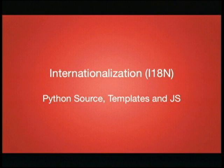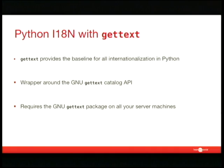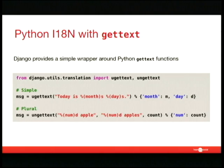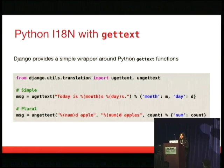So, internationalization of Python source, templates, and JavaScript. The gettext module in Python is essentially the baseline of all internationalization in Python. It is really just a wrapper around the GNU gettext Catalog API. Using this function in your Python source requires this package to be installed on all of your server machines. So if you're working with any sort of package management configuration, like Chef or Puppet, you want to add gettext to that. Django provides a really simple wrapper around the gettext functions that Python provides. You simply import this from the utils translation package in Django. You should be importing the ugettext function because it helps support Unicode strings, and given that Python 3 is going to be all Unicode, that's probably what you should be using.